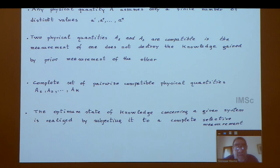He introduces compatible quantities, defined as those that do not destroy the knowledge you get by prior measurement of the other. A complete set is where if there is any other property which is compatible, it must be a function of A1, A2, AK.